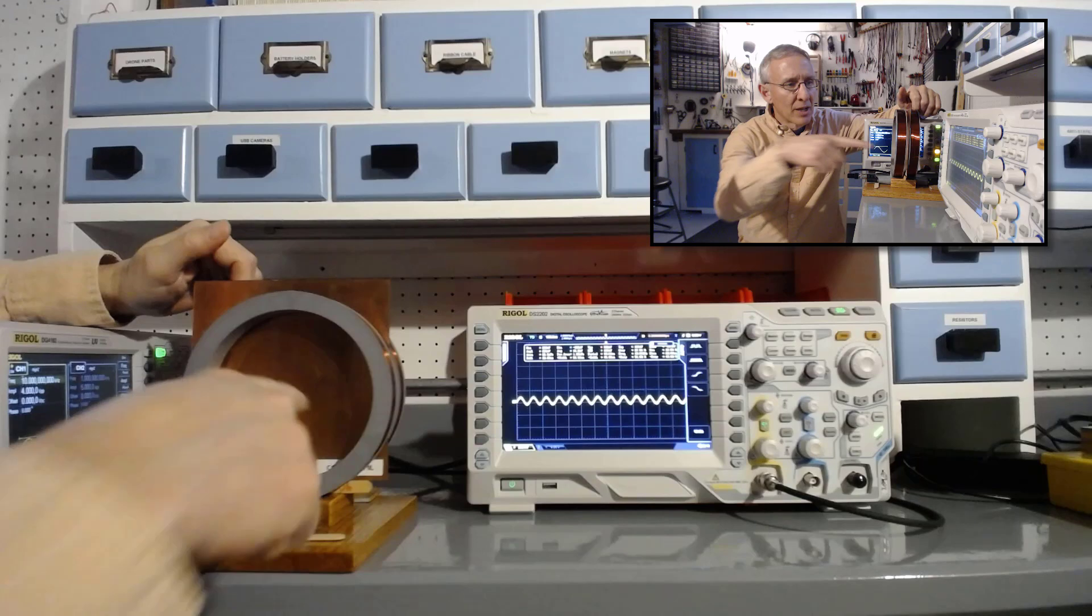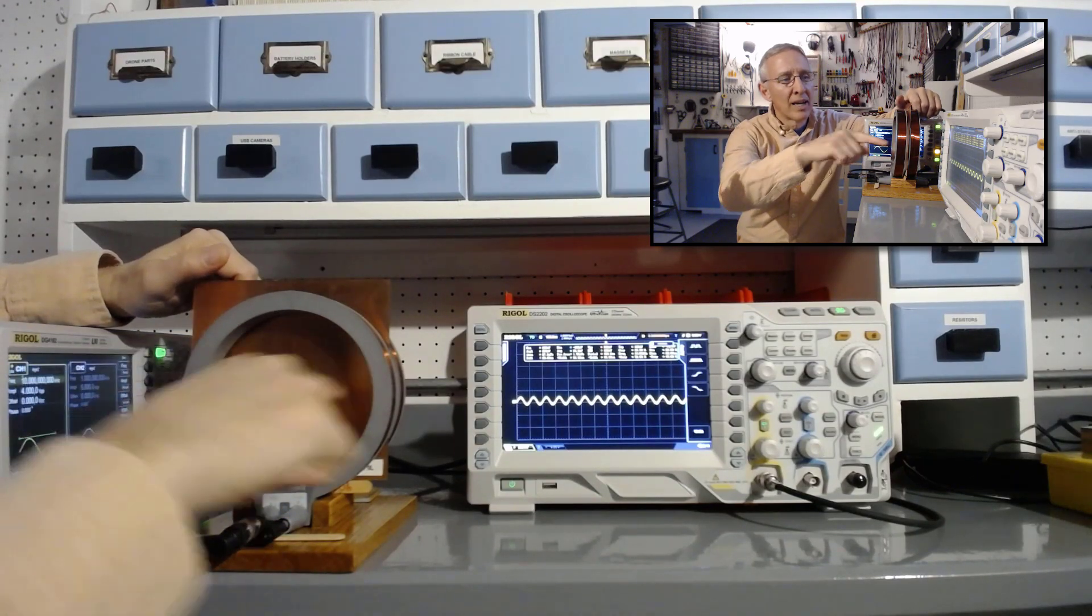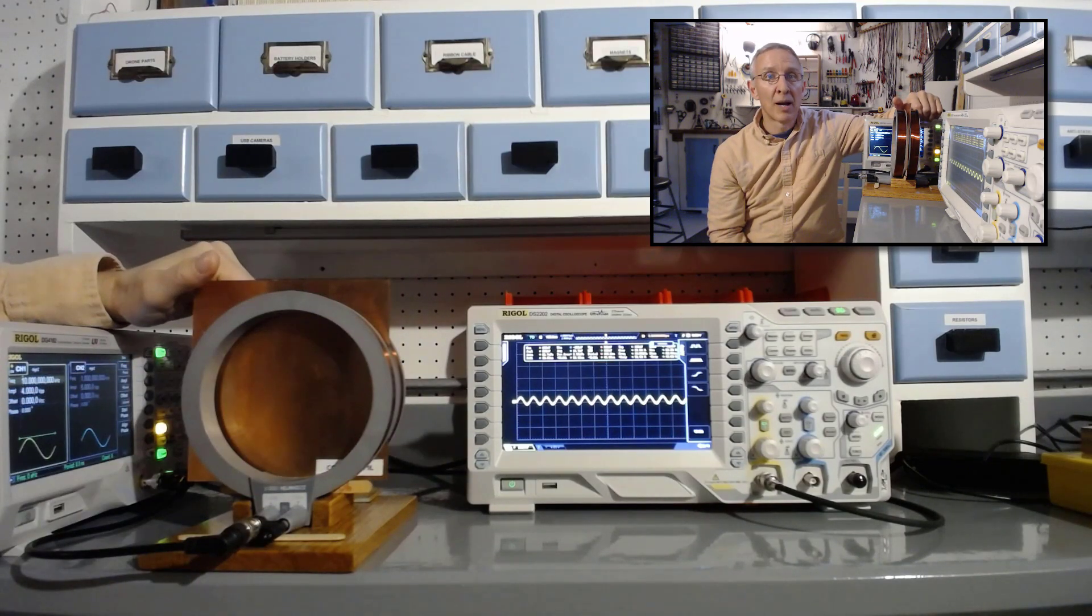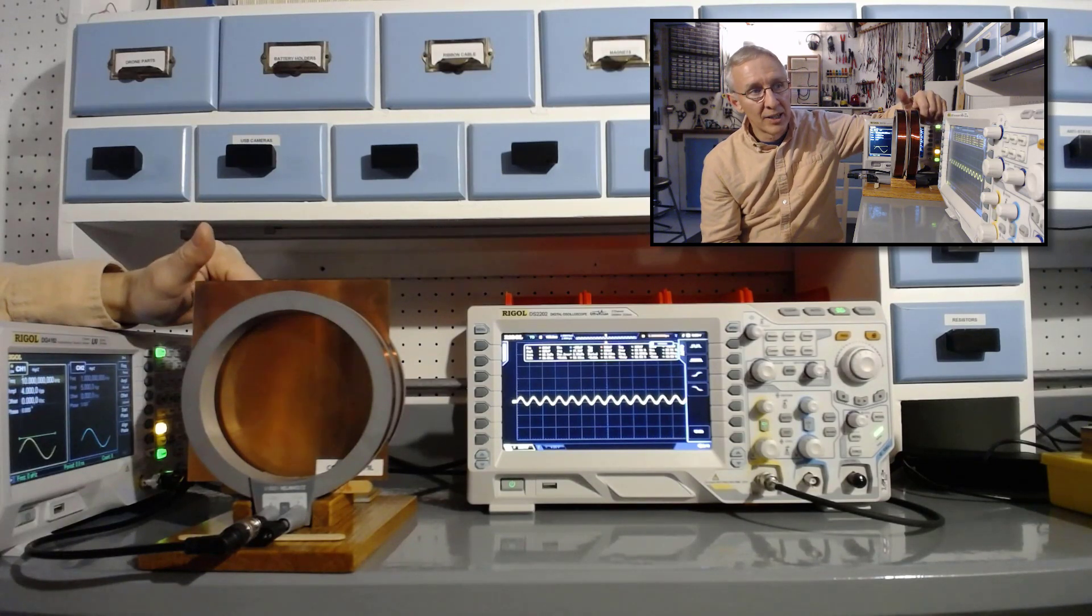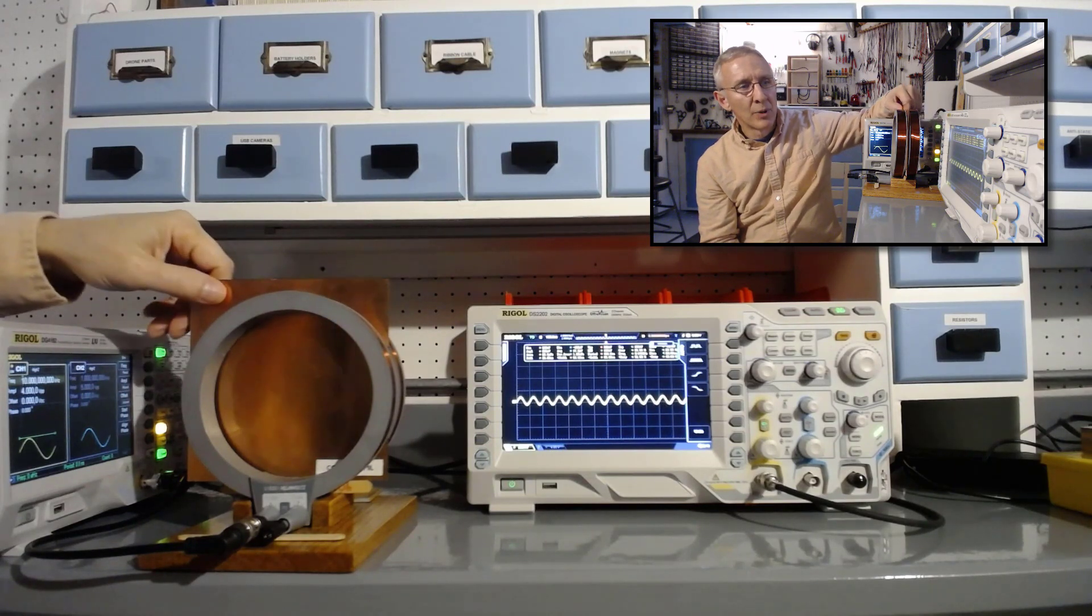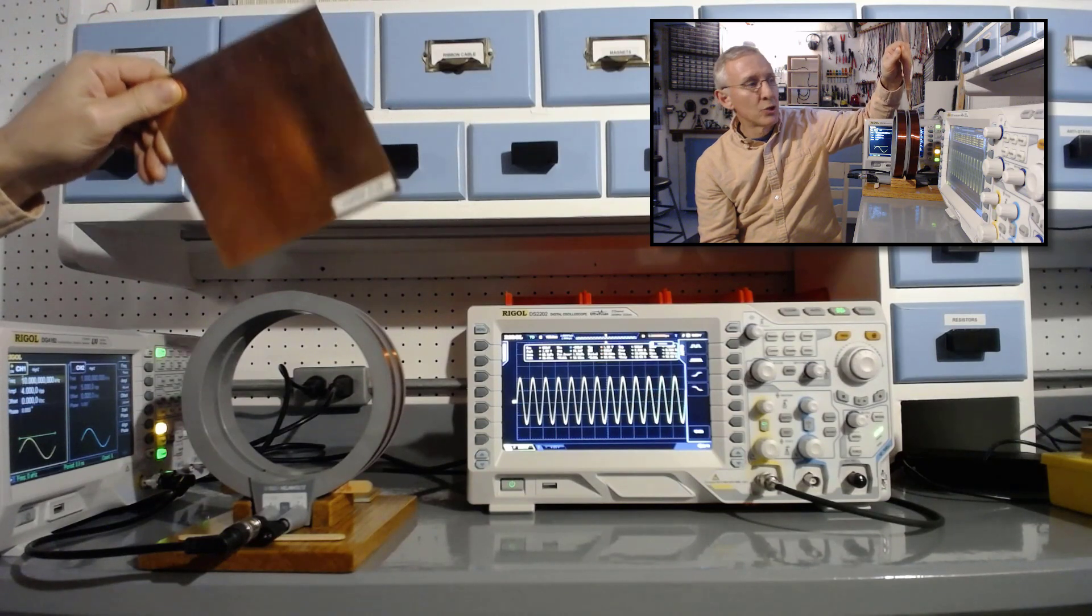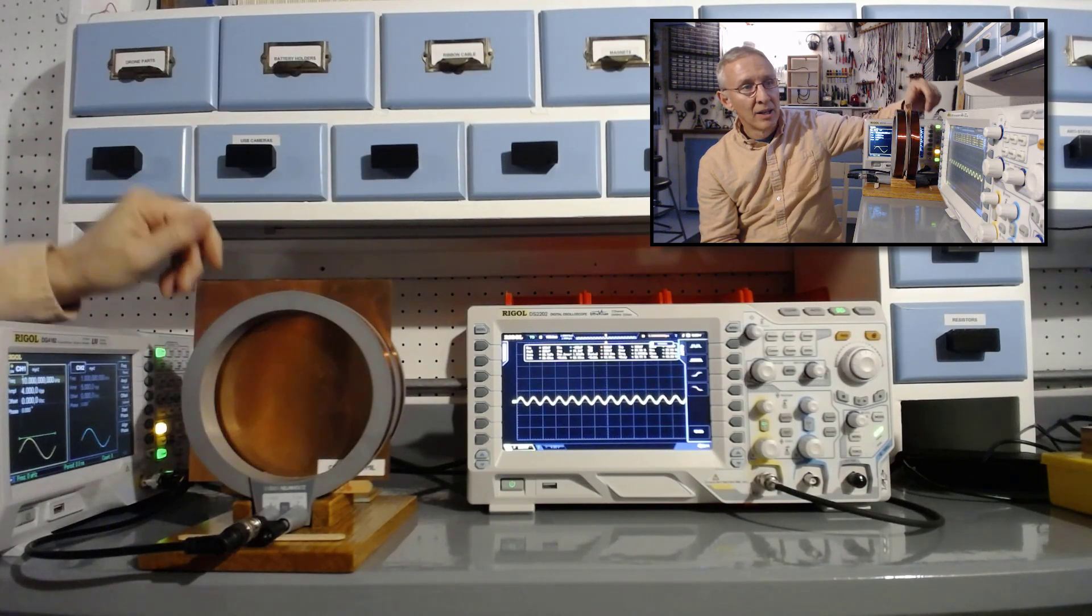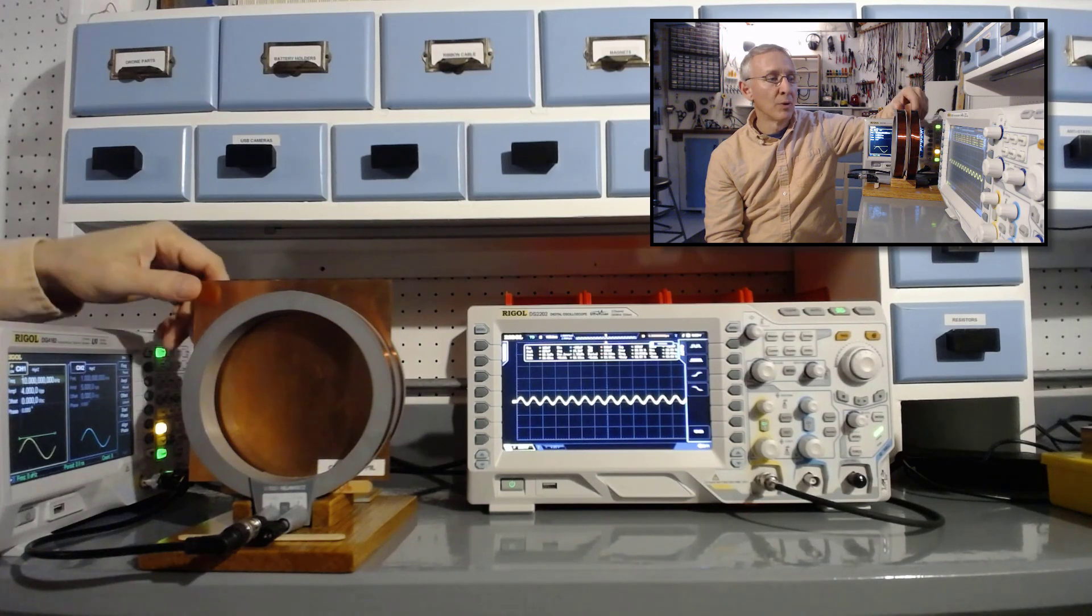So now we're getting significant attenuation of the field, but the attenuation is coming as a result of the eddy currents being induced in the copper. As the flux tries to pass through, it can't, so it basically is rerouted around the copper and couples to the primary coil without ever reaching the secondary coil. We're seeing significant attenuation from a relatively thin sheet of copper. We went from approximately 1.92 volts peak-to-peak without the shielding material, down to 340 millivolts peak-to-peak with the shield in place.